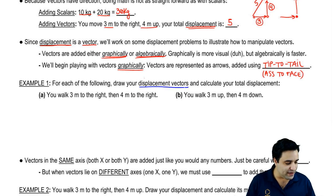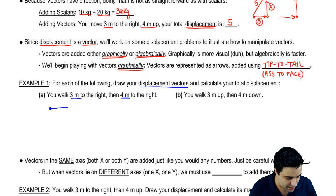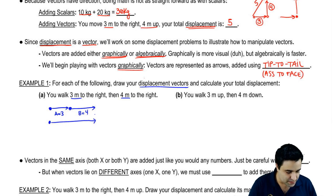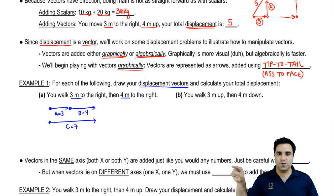Example one. For each of the following, draw your displacement vectors and calculate your total displacement. So you walk 3 to the right, and then you walk 4 to the right. This one's really simple. You walk 3 to the right. I'm going to call this A equals 3. And I'm going to tip to tail here. Then you walk 4 to the right a little longer, B equals 4.